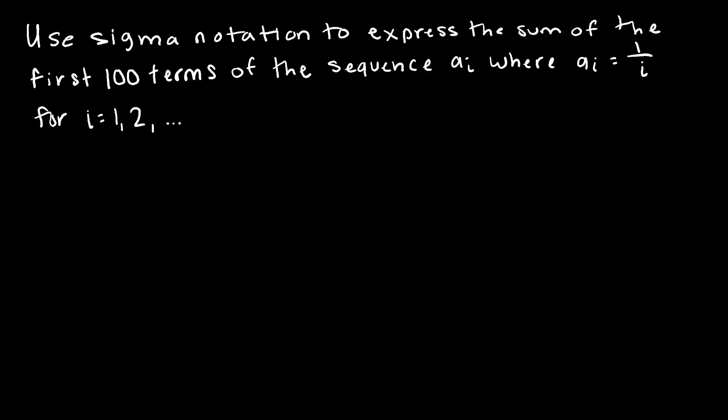So let's do a quick practice for how to write something using sigma notation. I want to use sigma notation to express the sum of the first 100 terms of the sequence a sub i, where a sub i is found by taking 1 divided by i, for obviously starting with i at 1, 2, 3, etc.